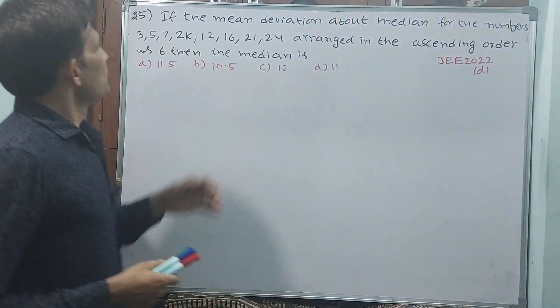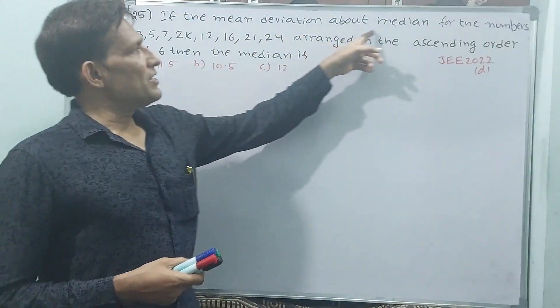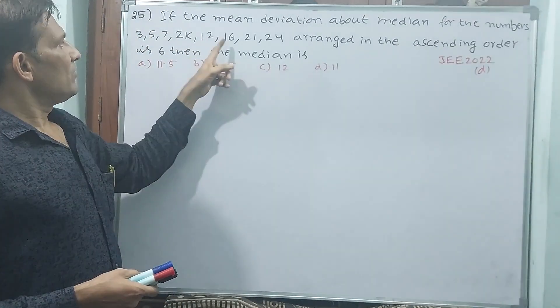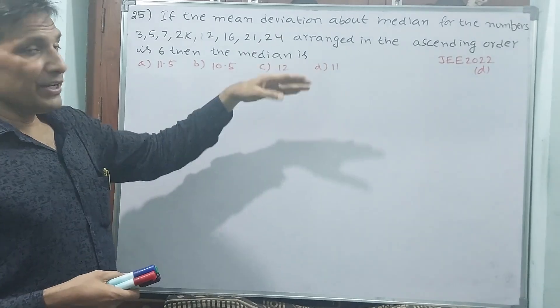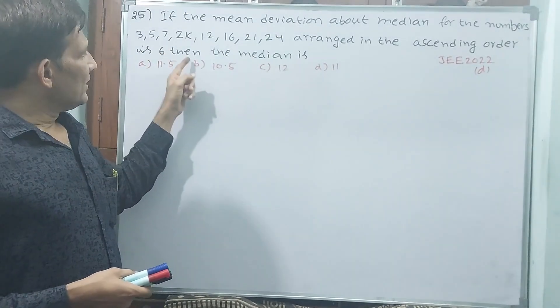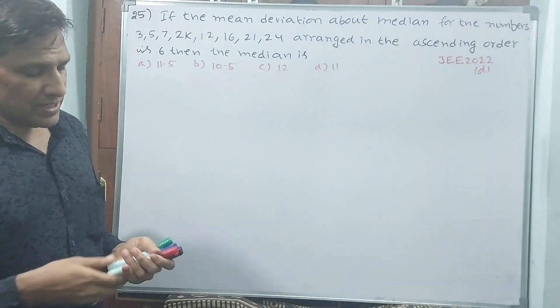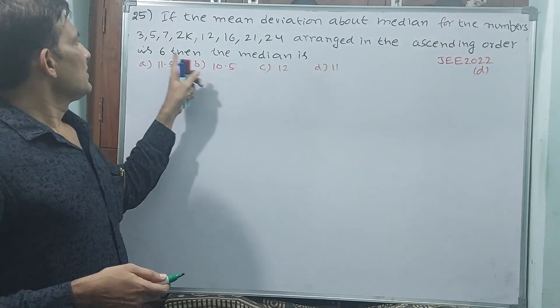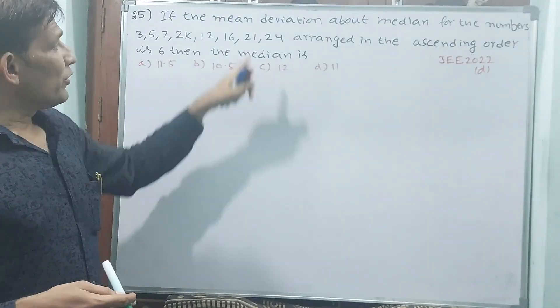If the mean deviation about median for the numbers 3, 5, 7, 2, K, 12, 16, 21, 24 arranged in ascending order is 6, then the median is - see here, without considering this mean deviation 6, we can find the median.